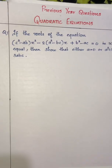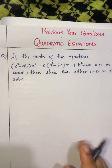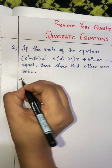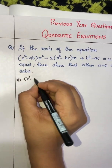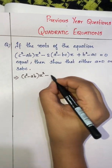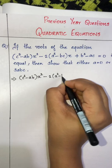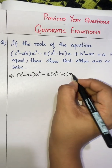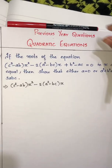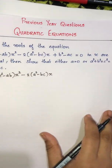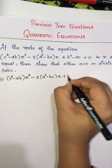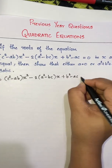Let us start. The equation is: (c²-ab)x² - 2(a²-bc)x + (b²-ac) = 0.